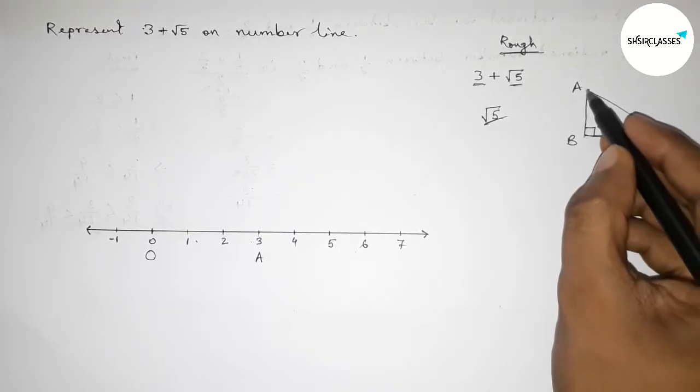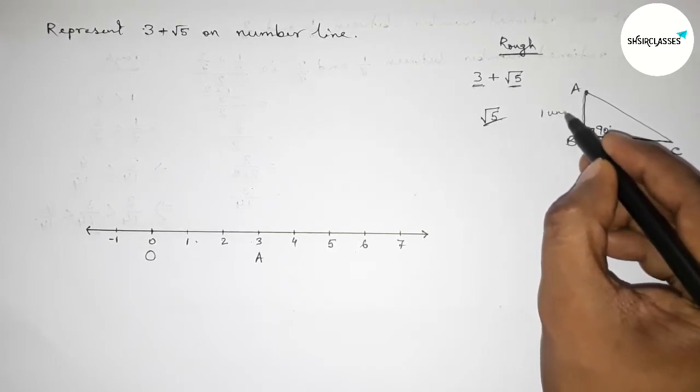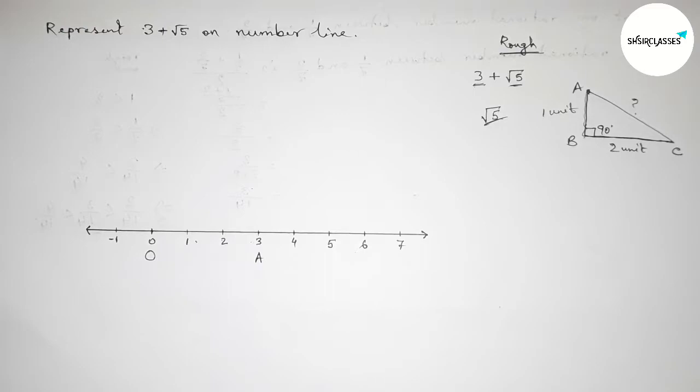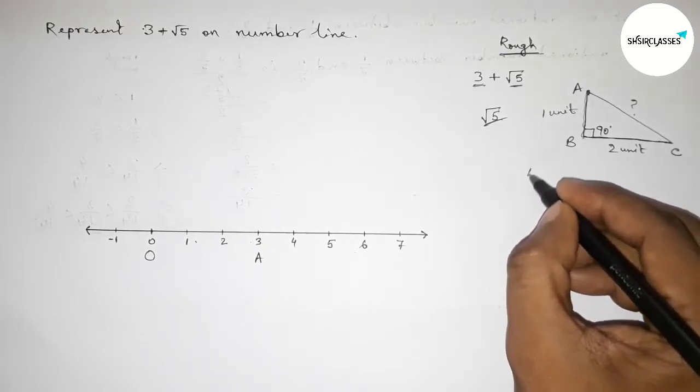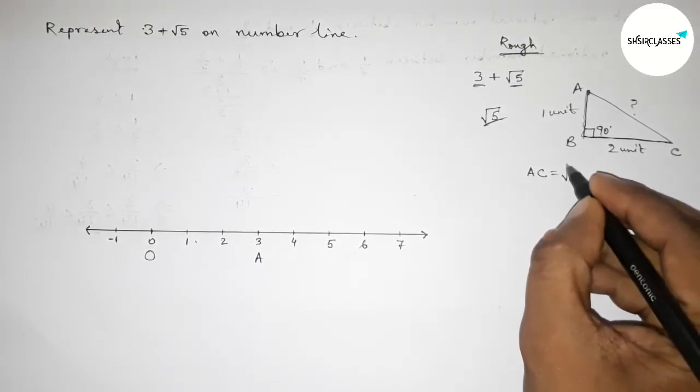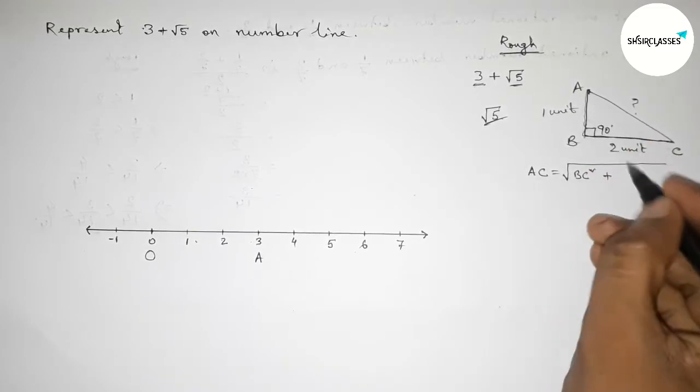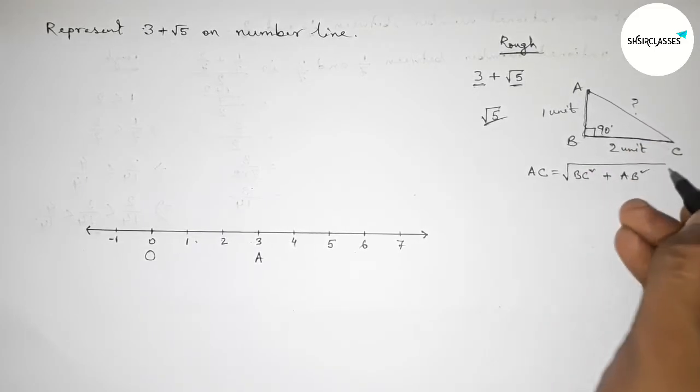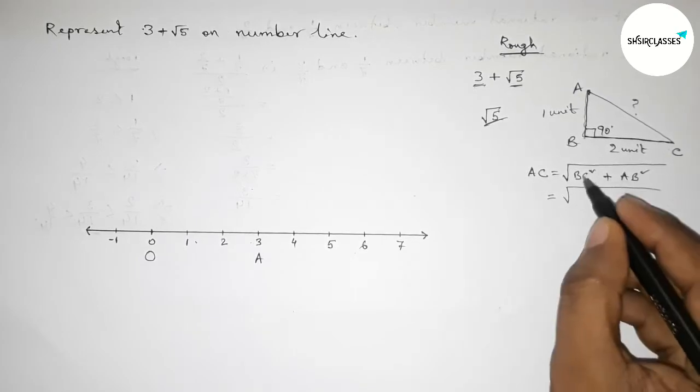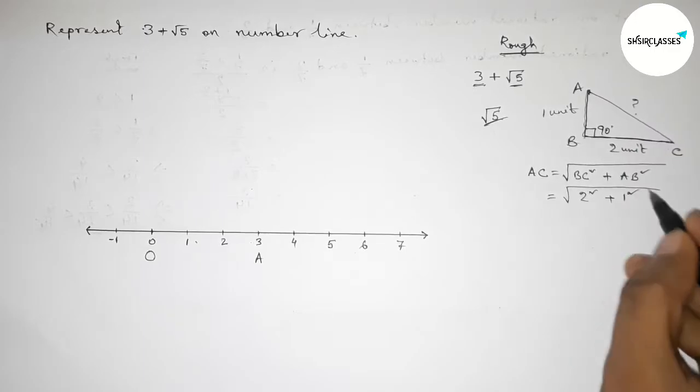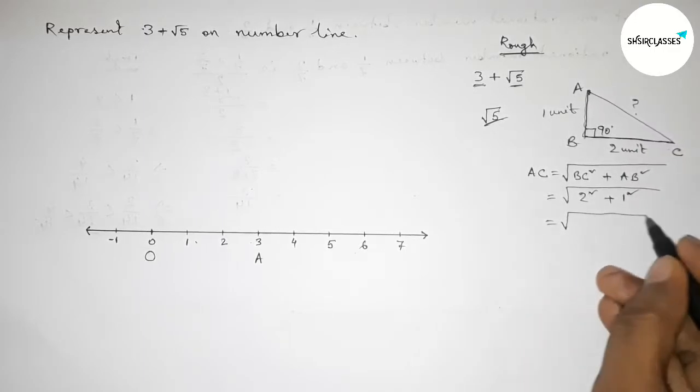So by using Pythagorean theorem, we can write hypotenuse AC equal to root over BC square, so BC square plus perpendicular AB square. So root over, this is 2 square plus 1 square. So root over 4 plus 1, so this is root 5 unit.